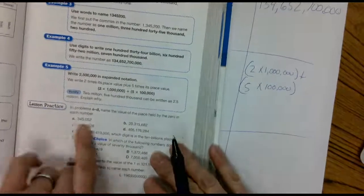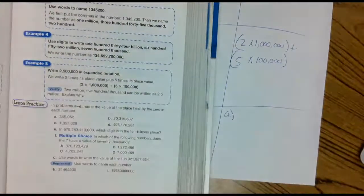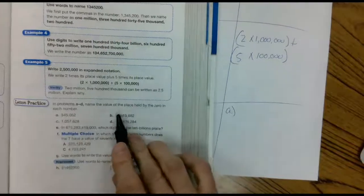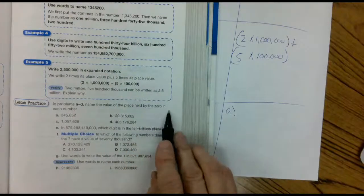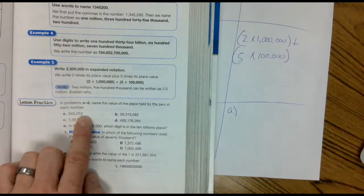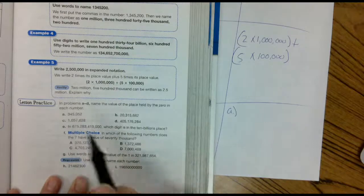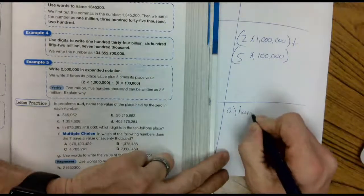Let's jump down to this lesson practice. Name the value of the place held by the zero. Three hundred and forty-five thousand fifty-two. The zero is in what place? Say it with me. Ones, tens, hundreds. So you're going to put a hundred there.